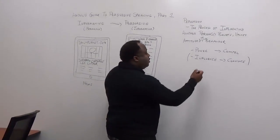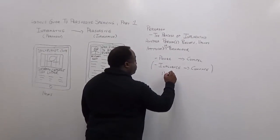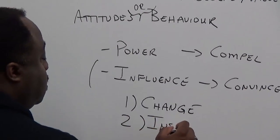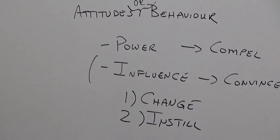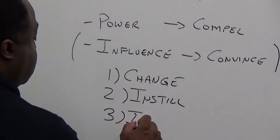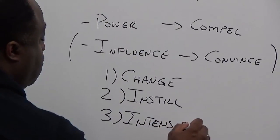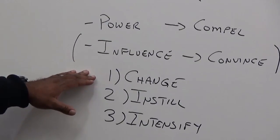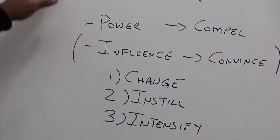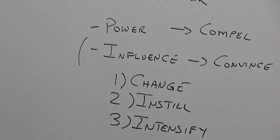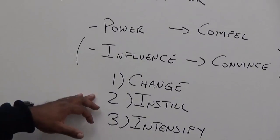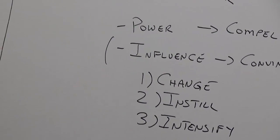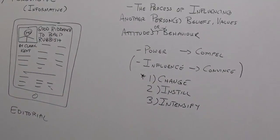How does this influence work? We can use influence to change somebody's attitudes, behaviors, or beliefs. We can use it to instill certain beliefs, values, or behaviors. Or we can intensify how they already feel about an issue. Of these three options, the most dramatic one is actually change — because when we change somebody's behavior, attitudes, or beliefs, we're making them go from one way of thinking or doing something to another. Intensify just makes it bigger or stronger. But change is the most dramatic way to influence someone.